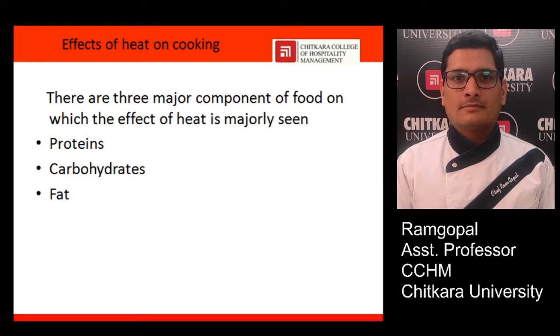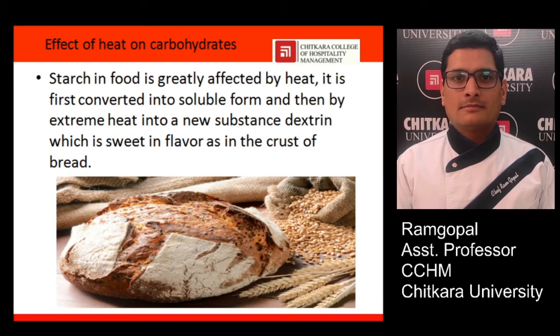Today we will discuss the effect of heat on carbohydrates and fats. Carbohydrates are divided into three categories: monosaccharides, disaccharides, and polysaccharides. Monosaccharides have a simple molecular structure — one of the best examples is glucose, with the chemical formula C12H22O11. This is the simplest form of carbohydrates and dissolves easily in water.